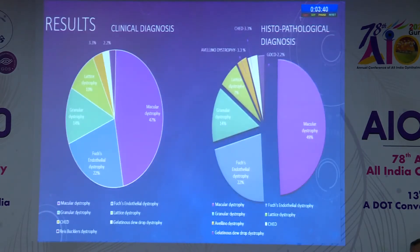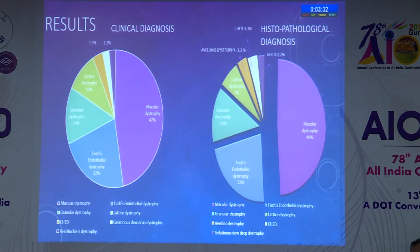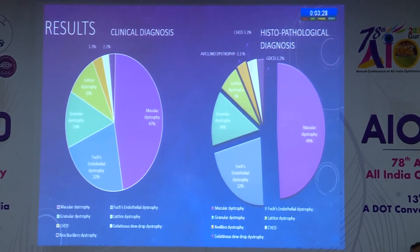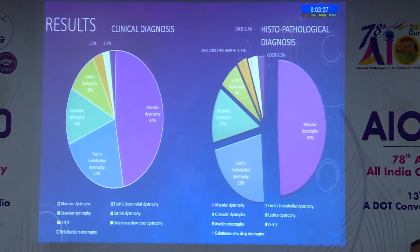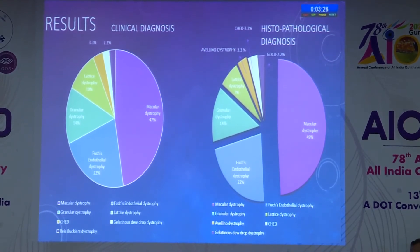Coming to results: clinically, macular dystrophy was diagnosed in 47% of cases, followed by Fuchs in 22%, granular dystrophy in 14%, lattice dystrophy in 10%, 3.3% were diagnosed as CHED, and 2.2% of eyes had gelatinous dewdrop dystrophy and Reis-Bücklers dystrophy.